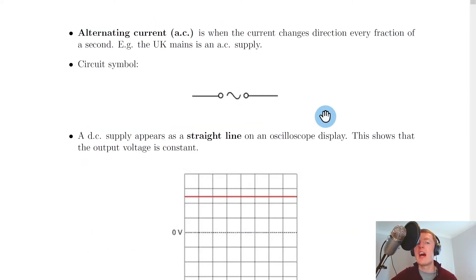Alternating current, on the other hand, also known as AC, is when the current changes direction every fraction of a second. For example, the UK mains is an AC supply. So every time you plug a device into the wall, that is the mains, so you're using alternating current.